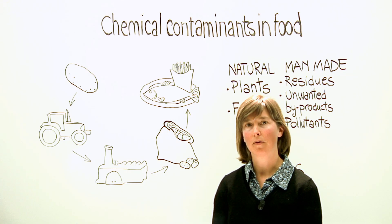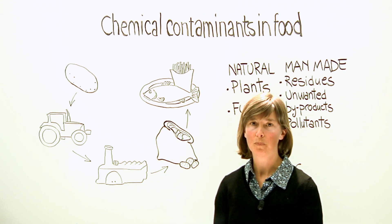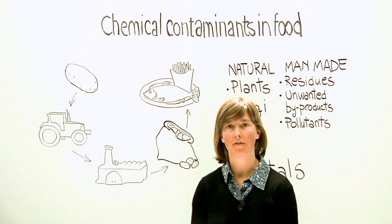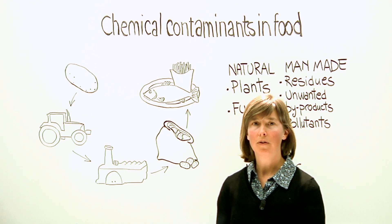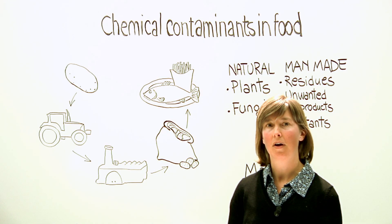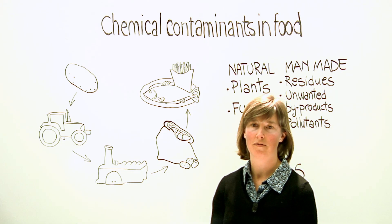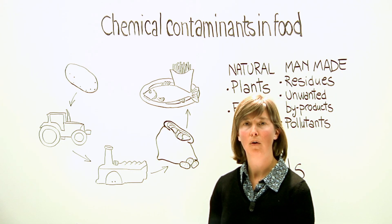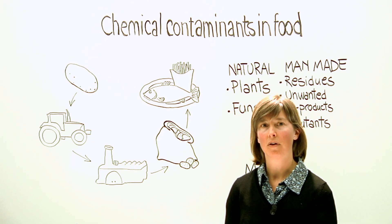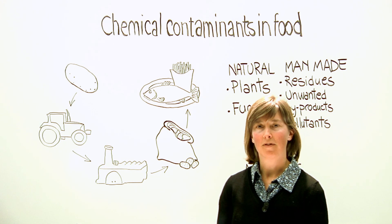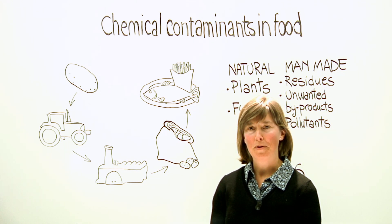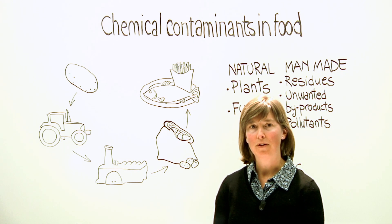So why are chemicals in our food? Well, all foods and living matter, including our own bodies, are made up of chemicals. The nutrients in our food comprise carbohydrates, protein, fat and fibre, and a whole host of other elements. These compounds together give us a balanced diet and the pleasurable eating experience that we all enjoy.